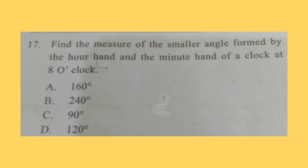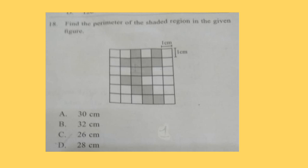Question 18: Find the perimeter of the shaded region in the given figure. Here each small square has a side of one centimeter. Correct answer is option D, 28 centimeters.